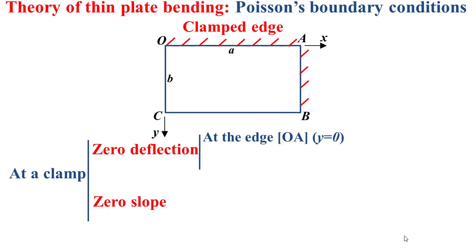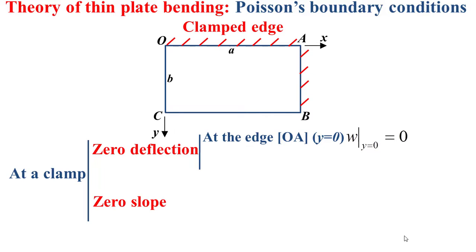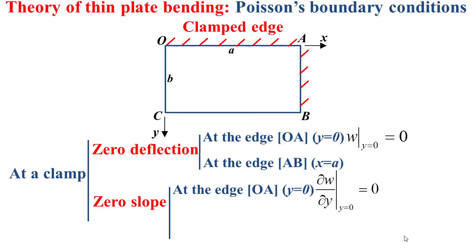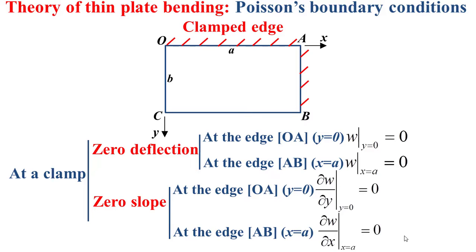Zero deflection at the edge OA, defined by y equal to zero, means that the deflection w at y equal to zero is equal to zero. Zero slope at the edge OA means that the variation of the deflection w along the direction y equal to zero is equal to zero. Similarly, at the edge AB defined by x equal to a, we have w at x equal to a equal to zero, and the variation of w along the direction x equal to a is equal to zero.